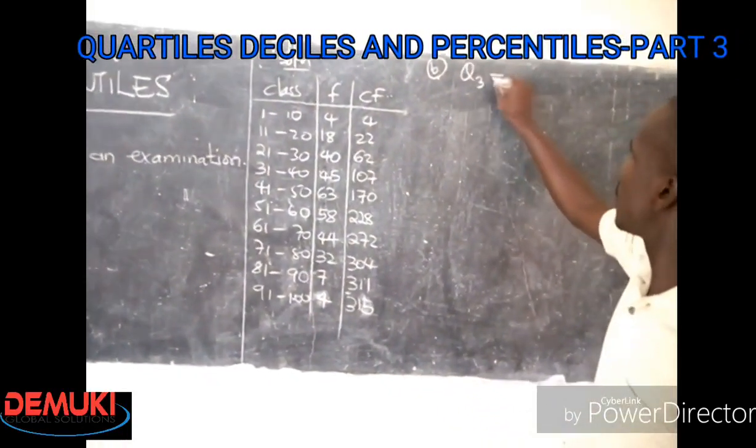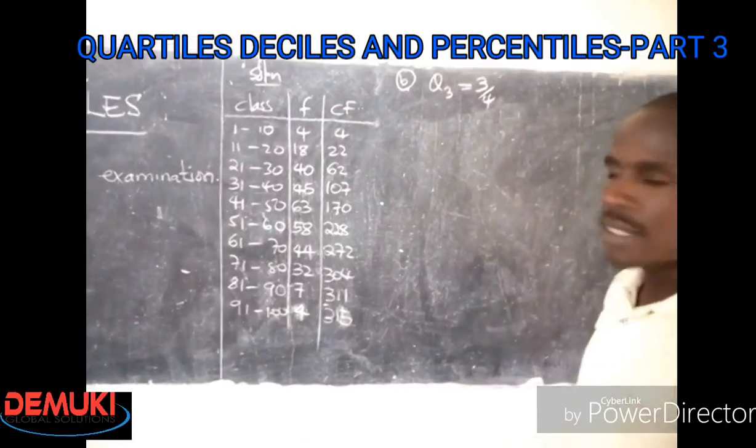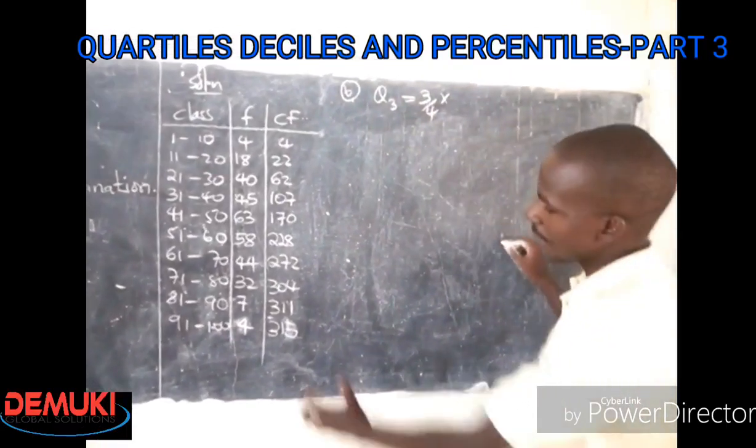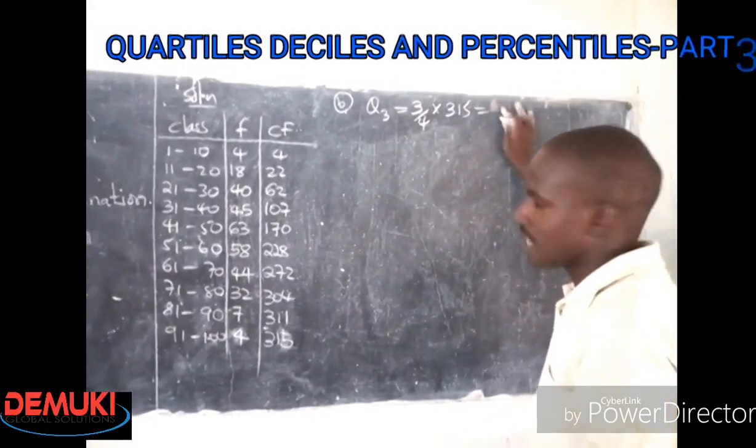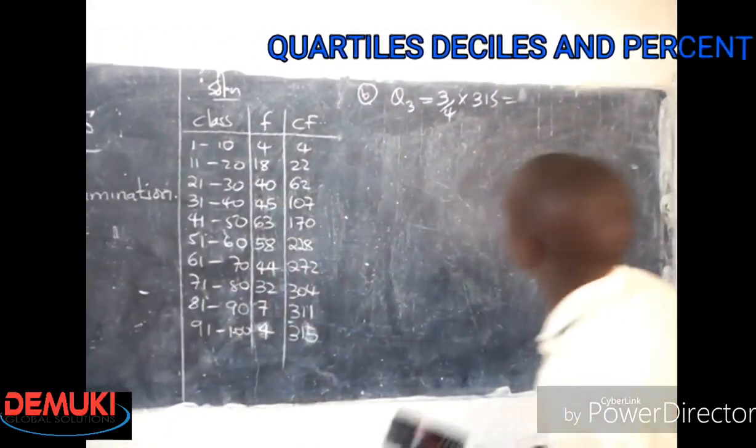Upper quartile is Q3, and we said Q3 uses three quarters times the total number of terms, which was 315. So it's three quarters of 315.